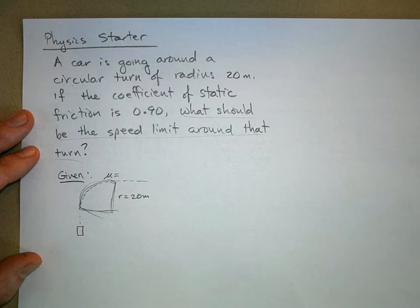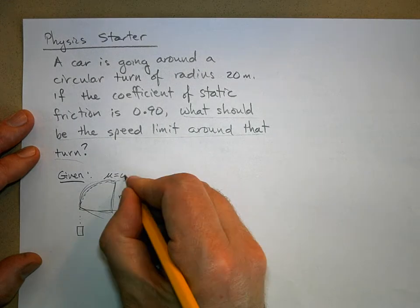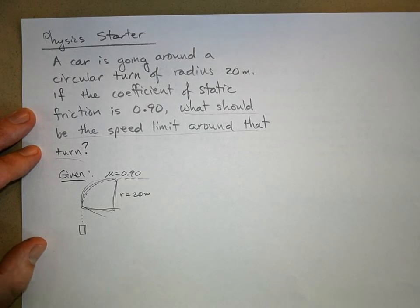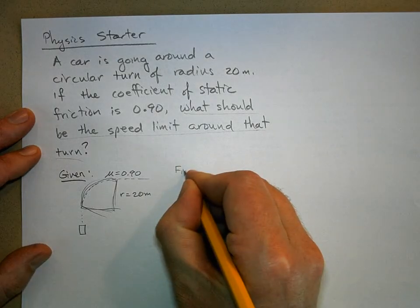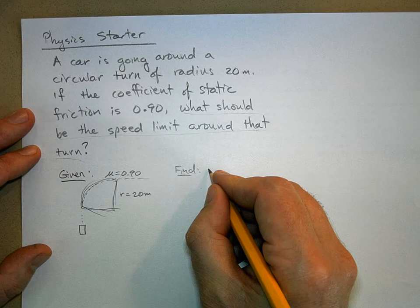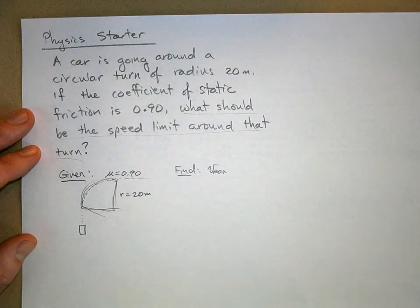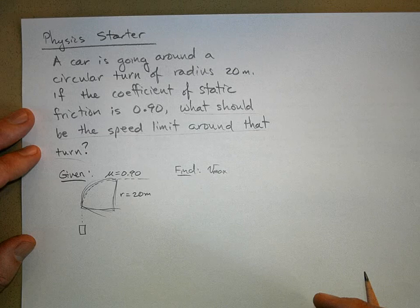We're going to say that the radius is 20 meters and the coefficient of friction between your tires and the road is 0.90—that's pretty good grip. What are we trying to find? V max. Let's find the maximum speed and from that we can determine a speed limit.